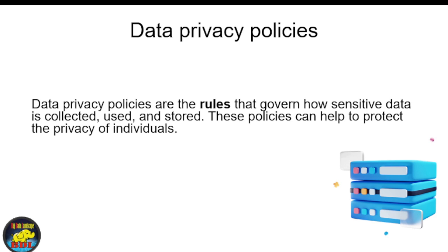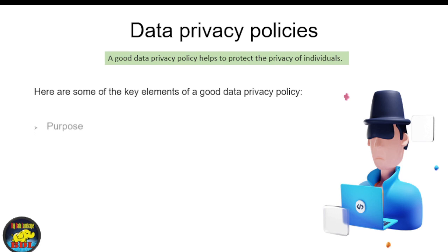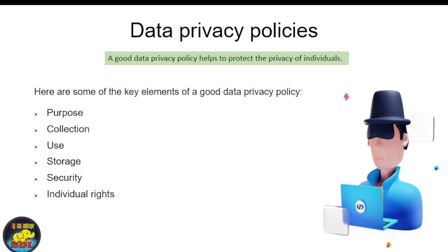Here are some of the key elements of a good data privacy policy. The Purpose: the policy should state the purpose for which the data is being collected and from whom. The Use: the policy should state how the data will be used and who will have access to it. The Storage: the policy should state how the data will be stored and for how long. Security: the policy should state how the data will be protected from unauthorized access, use, or disclosure. Individual Rights: the policy should state the individual's rights with respect to their data, such as their right to access, correct, or delete their data. Contact Information: the policy should include contact information for the organization responsible for the data.